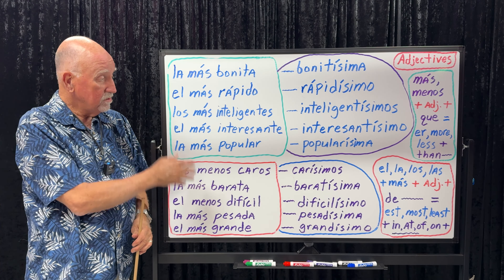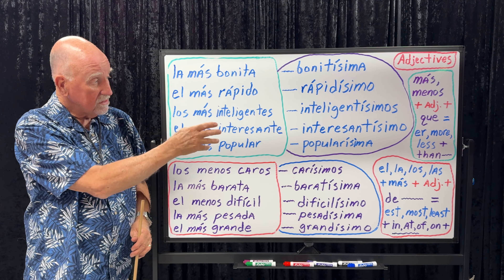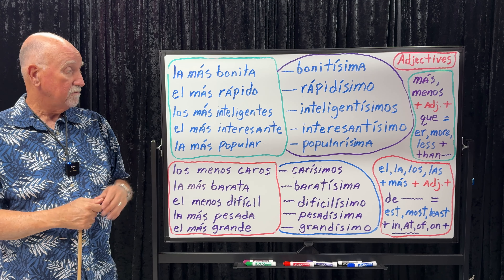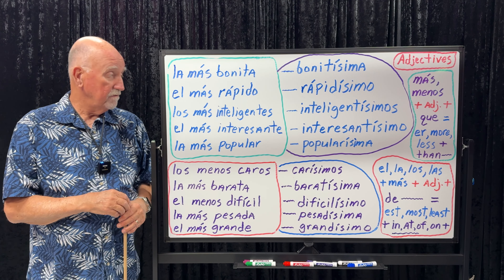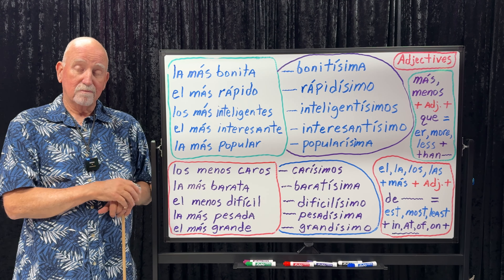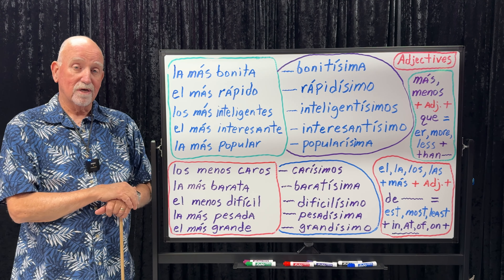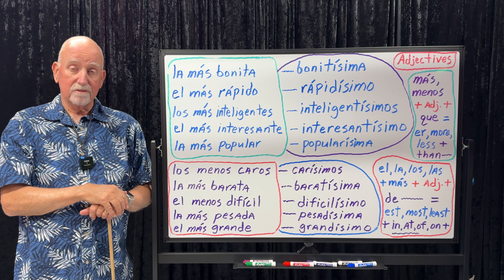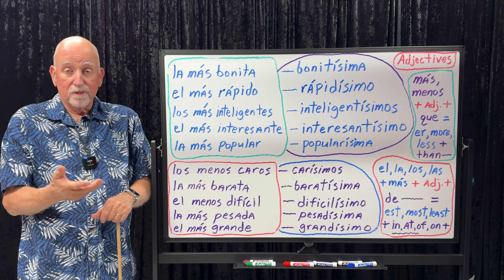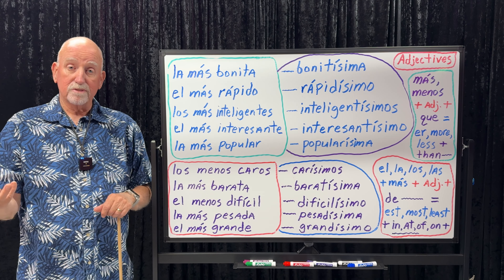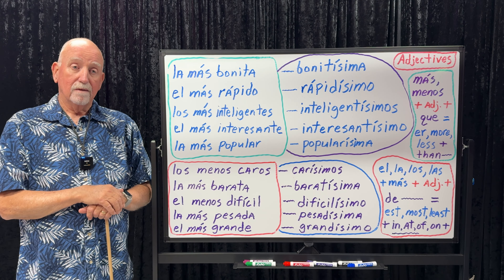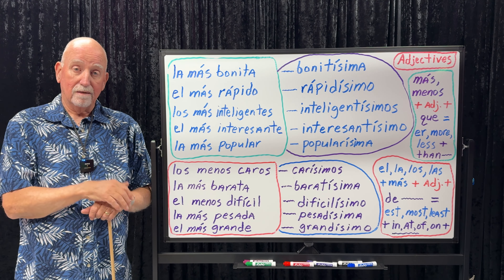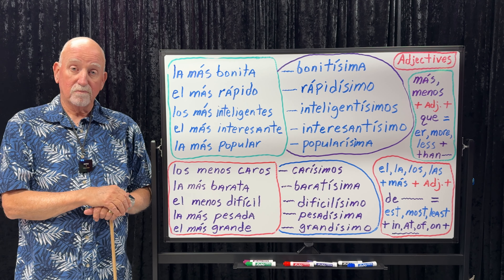We have six different clusters on the board. Our first cluster has examples of superlatives, and I'm going to show you a nice little trick. If I say la más bonita, I'm obviously talking about something feminine — bonita is pretty. Let's say we're talking about a girl or a lady: la más bonita — the prettiest.